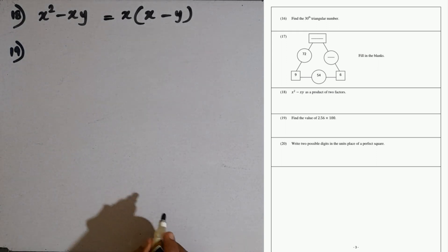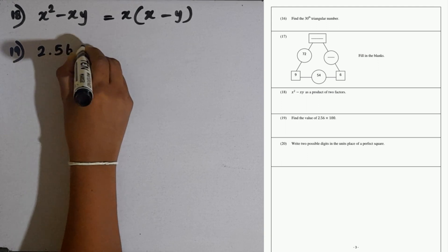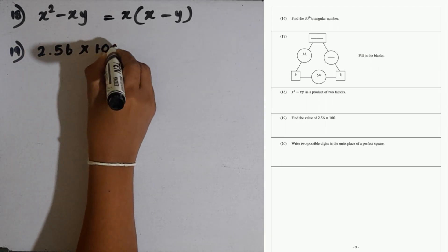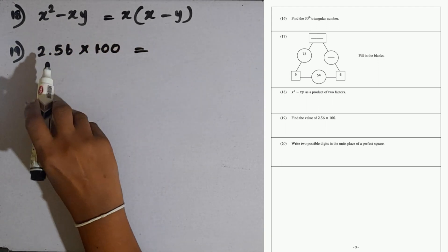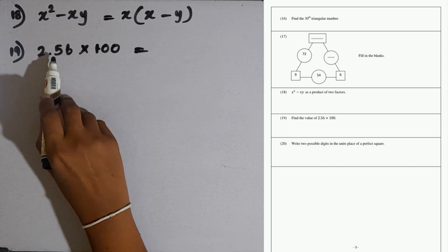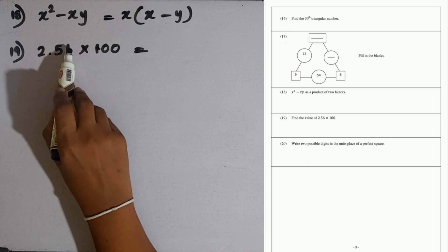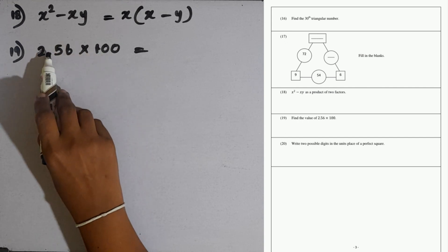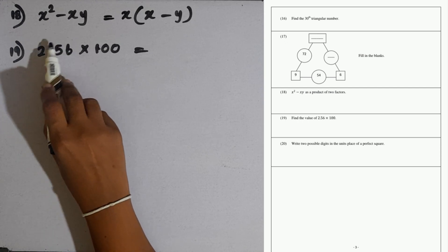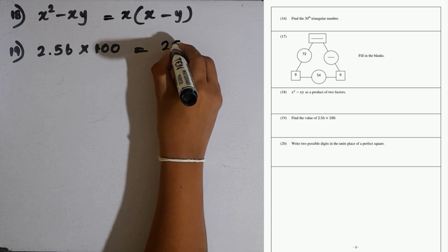Question number 19: find the value of 2.56 multiplied by 100. When a decimal number is multiplied by a power of 10, the decimal point goes number of places to the right side. As this has two zeros, it goes two places to the right side, so the answer is 256.